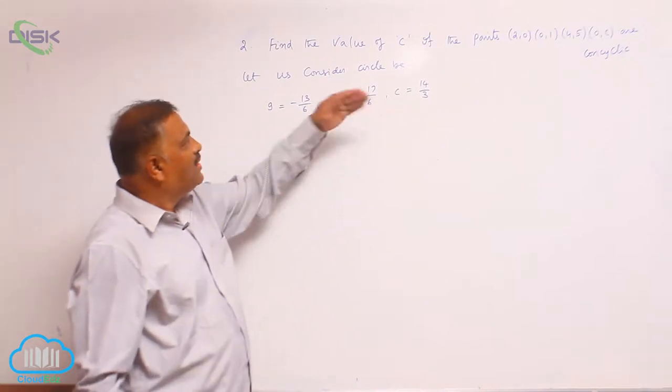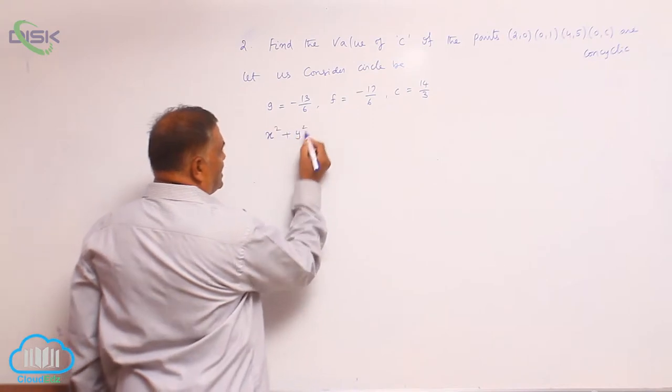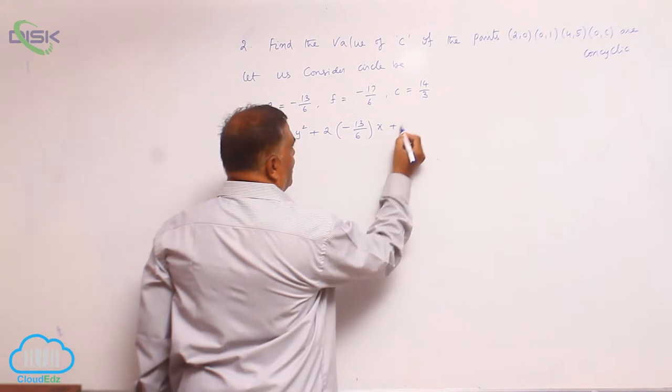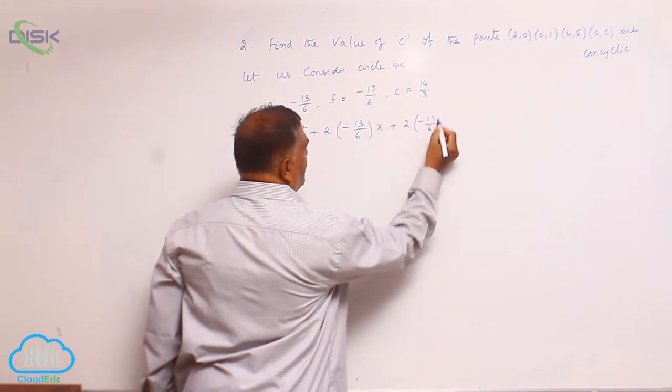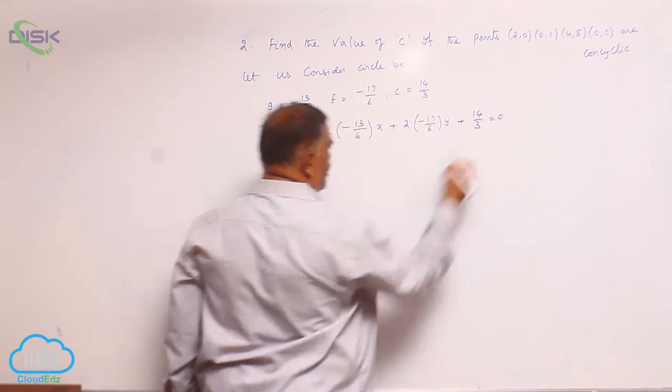We got all the values GFC. Let us substitute in the back equation: x square plus y square plus 2 into minus 13 by 6 into x plus 2 into minus 17 by 6 into y plus 14 by 3 is equal to 0.